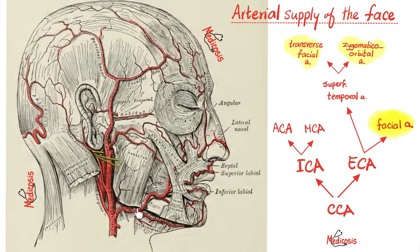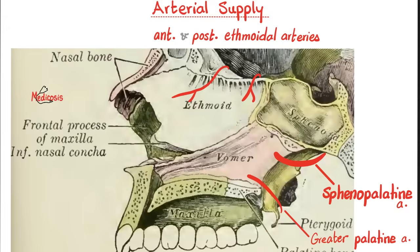The face is supplied by the facial artery and by branches of the superficial temporal as well. The nose is supplied by the anterior and posterior ethmoidal arteries, the sphenopalatine artery, the greater palatine artery, and the septal artery — which came from the superior labial, which came from the facial artery.